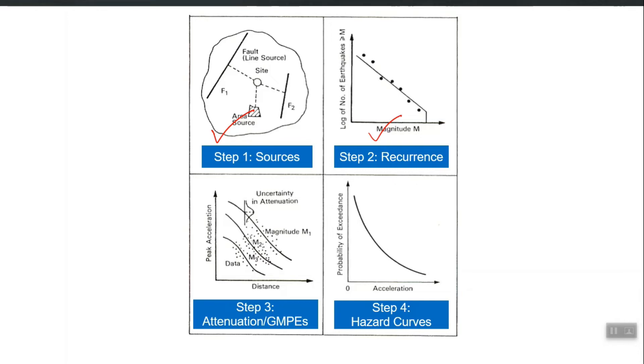So finally, the hazard curve which we get obviously is the result of all of those steps and therefore it has that uncertainty. So we account all those uncertainties in using different procedures. For example, one of the common way to account is logic tree.